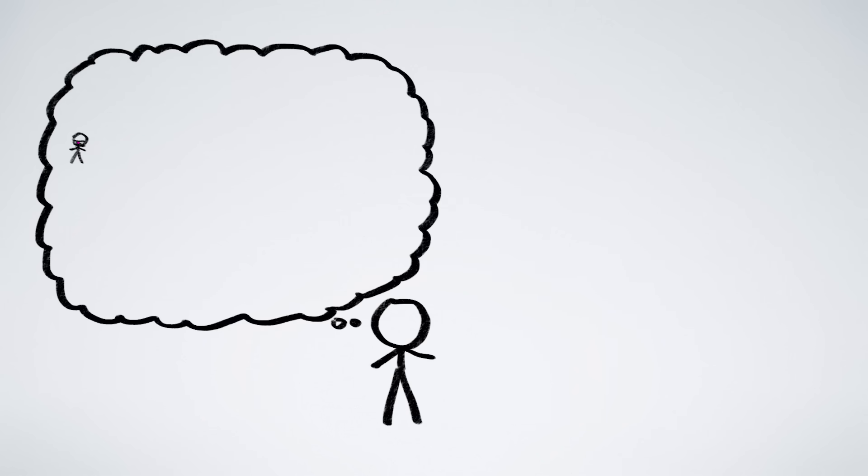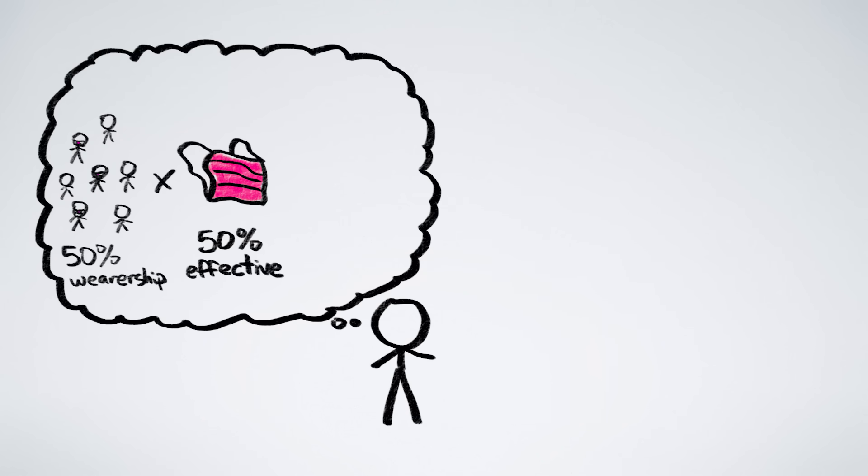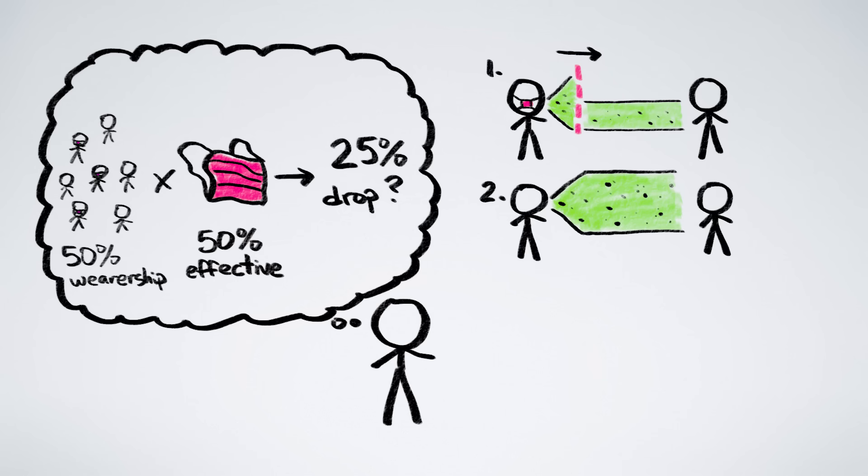Your first guess might have been that if 50% of people wore 50% effective masks, you'd get a 25% drop in disease transmission, because 50% of 50% is 25%. In fact, this intuition would be true if masks were only effective one way, like on exhalation only. Then there'd just be two routes, either the contagious person wears a mask or they don't, and these average to 25%.